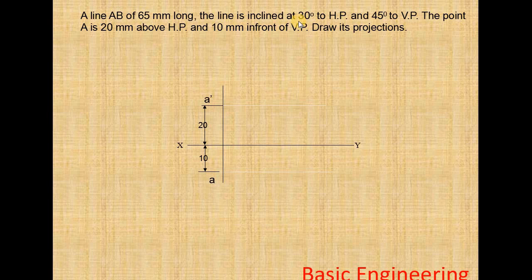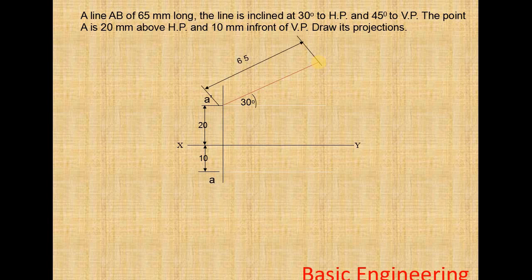At A', take 30 degrees to HP and draw a line of 65mm at that angle. Name the end point as B1'. Now draw a locus line at B1' — that means draw a horizontal line through B1'.